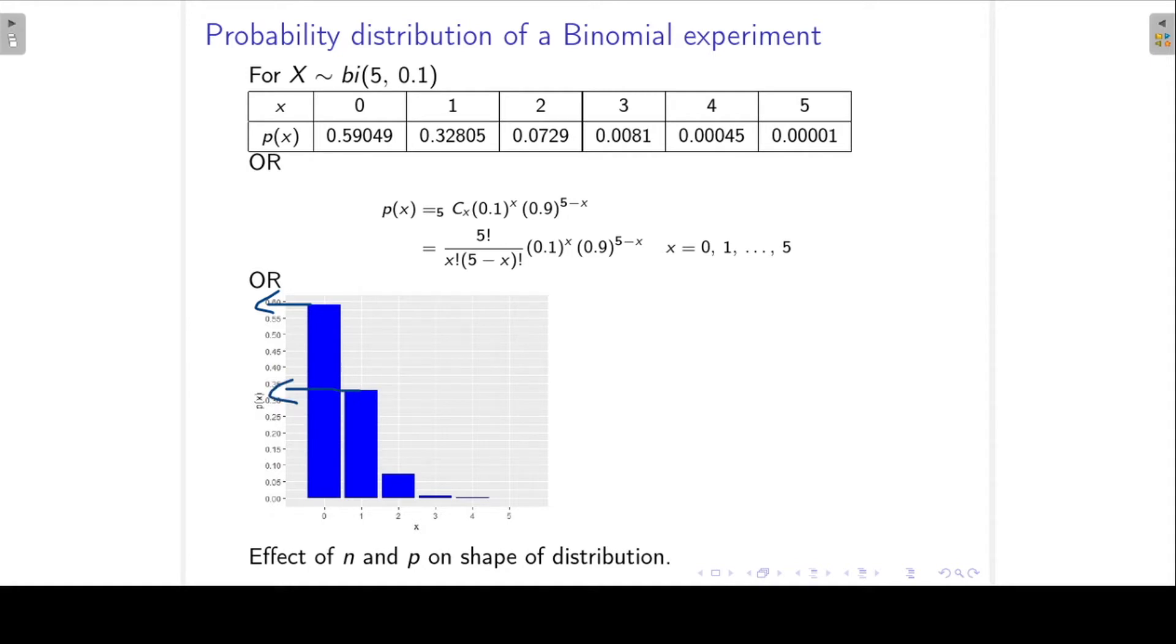So this is for the specific distribution where x follows the binomial distribution with n equal to 5 and p equal to 0.1. But what is the effect of these two parameters, n and p? How will my distribution change when I change my parameters?